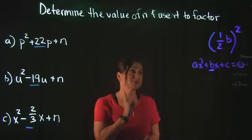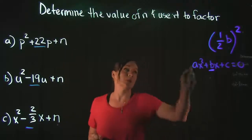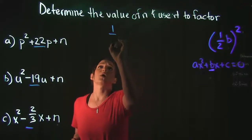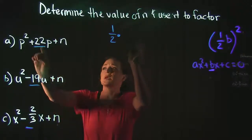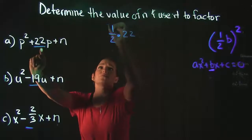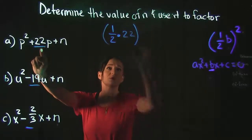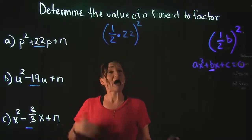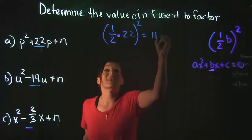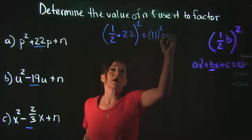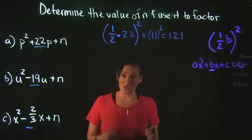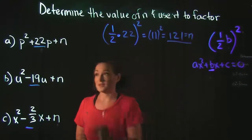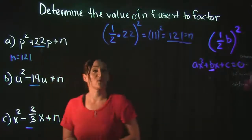So our first step to find n, we plug into this formula. For example a, we're going to take one half times b. b is going to be 22, and then whatever we get when we do that, we're going to square it. So one half times 22—half of 22 is equal to 11, and if we square 11 we get 121. This is your n. So n is equal to 121.